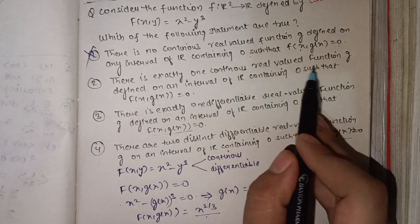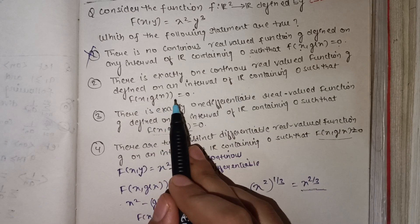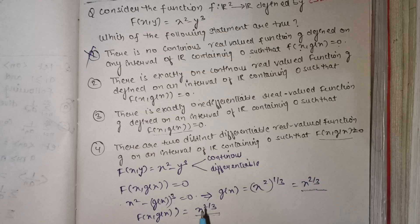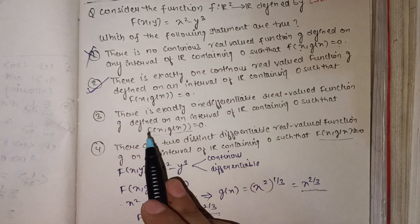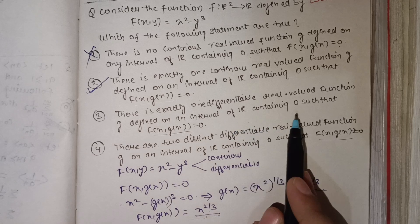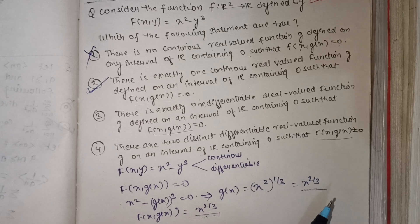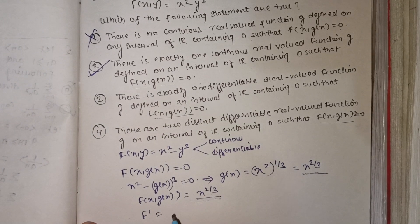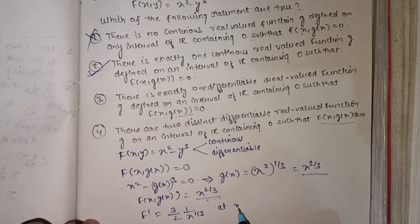The next option states there is exactly one continuous real-valued function g defined on an interval of R containing zero such that f(x, g(x)) = 0. If we differentiate g(x) = x^(2/3), we get (2/3)x^(−1/3), and at x = 0 this function is not differentiable.